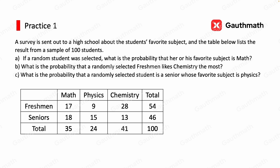Let's now try our practice problem. A survey is sent out to a high school about students' favorite subjects, and the table below lists the results from a sample of 100 students. Part A: if we randomly select a student, what is the probability that his or her favorite subject is math?